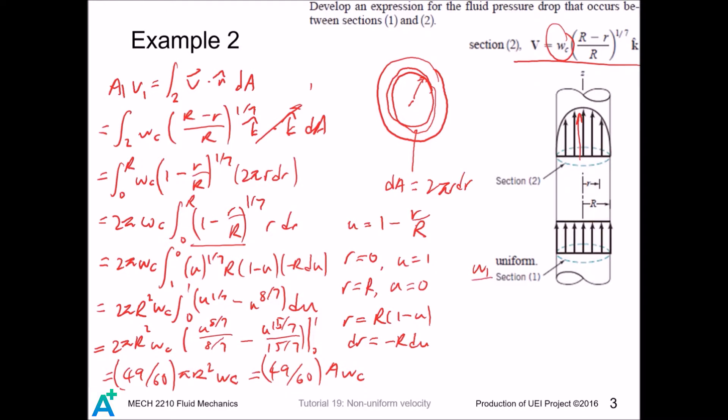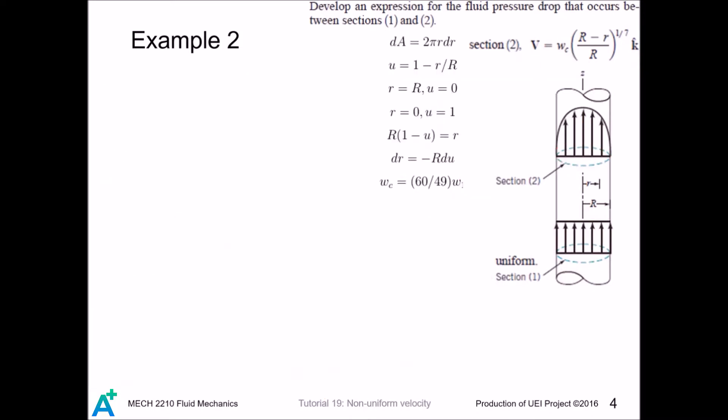But V1 here is W1, and area1 equals area2 equals area of the pipe. So this cancels out, and the centerline velocity is... And we continue our task. Let's write down the linear momentum equation in the z direction.